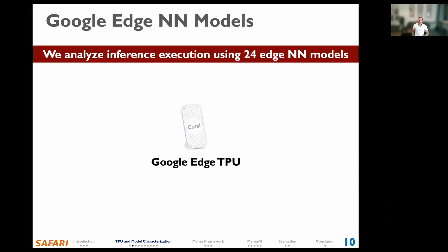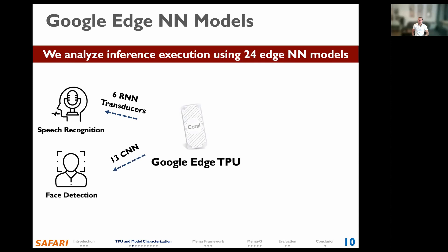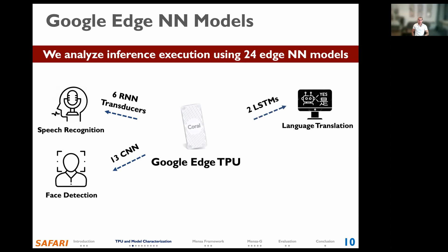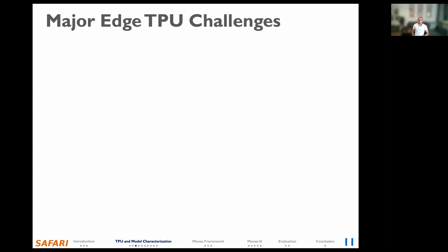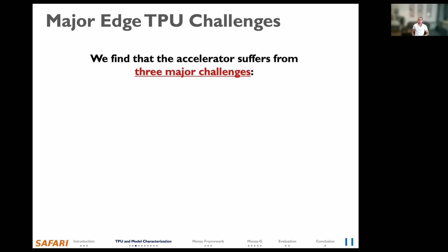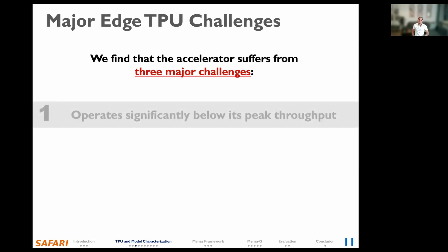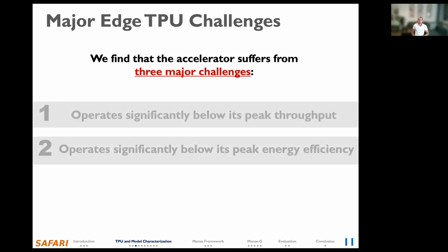We analyze the inference execution of the accelerator using 24 edge neural network models serving as internal benchmarks from the Google Edge TPU, including 6 recurrent neural network transducers for automatic speech recognition, 13 convolutional neural networks for image classification, 2 long short-term memory LSTMs for language translation, and 3 recurrent convolutional neural networks for image captioning. We found three major challenges: the accelerator operates significantly below its peak throughput, below its peak energy efficiency, and handles memory access inefficiently.